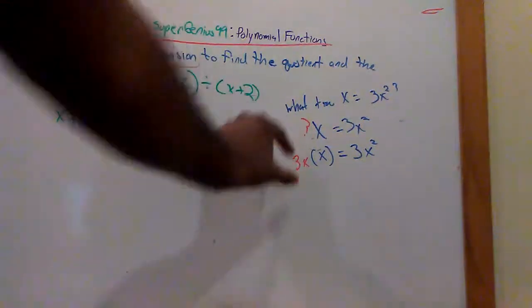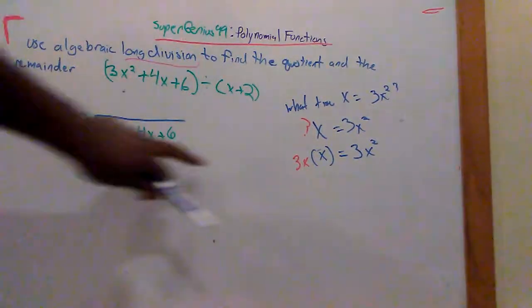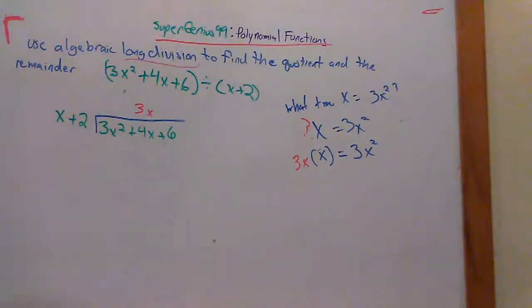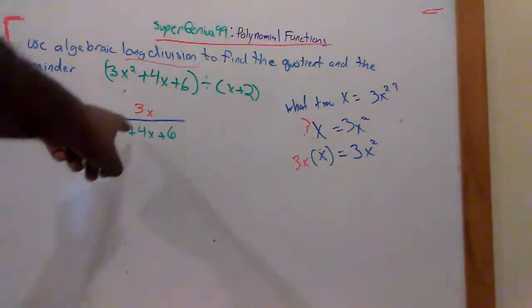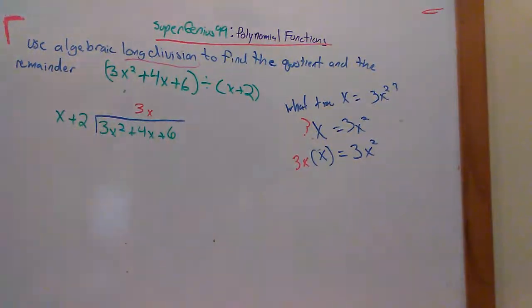Now, what you're going to do is take this portion here and put the x over the x. When you do long division polynomial functions, you always put the same variable type over itself. You don't put 3x over 3x squared. You put 3x over 4x because they're like terms. So you put the x over the x. That's just how it's done.